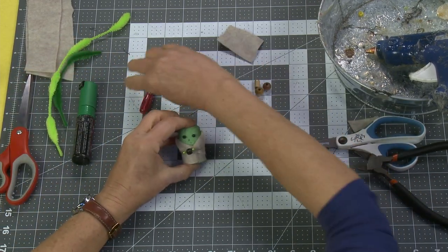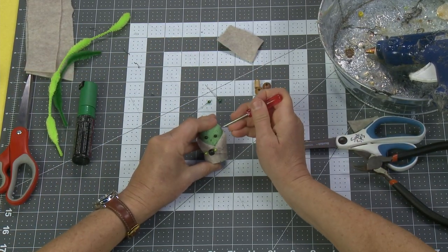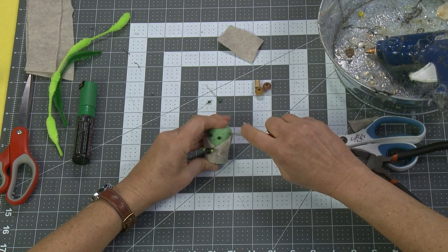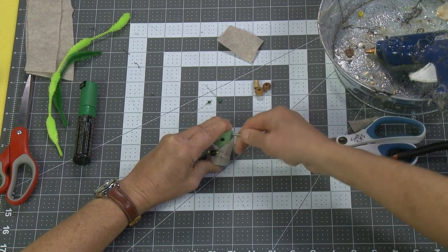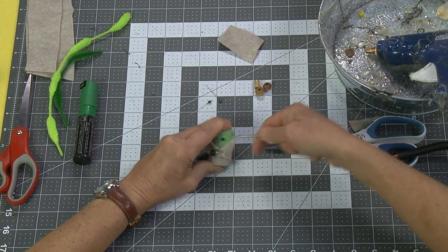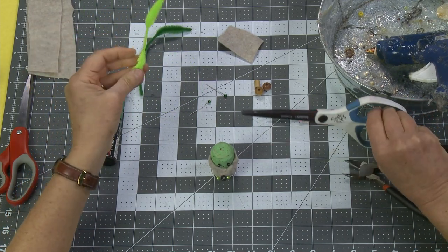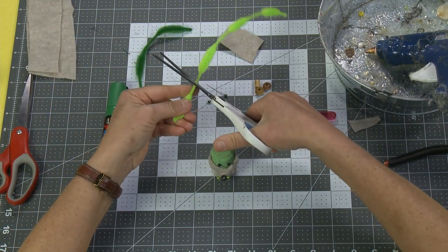Now what he needs are his ears, and that's what we're going to use the awl for. I'm just going to make a little hole with my awl, just give a little push in there and make a nice little hole. For his ears, I'm going to be using these bumpy pipe cleaners which I love, and I'm going to use my everyday scissors to cut.